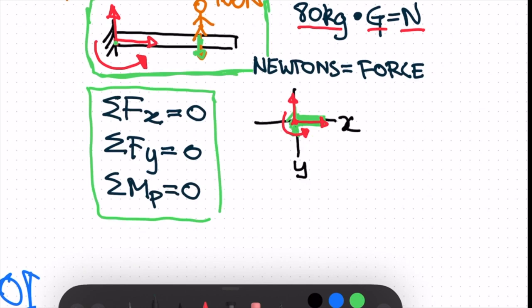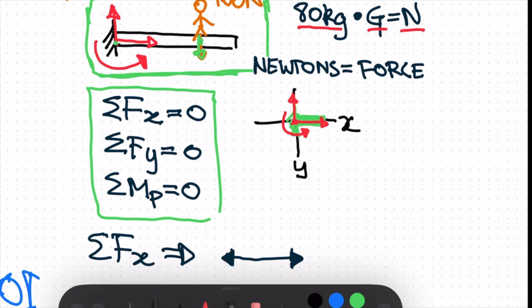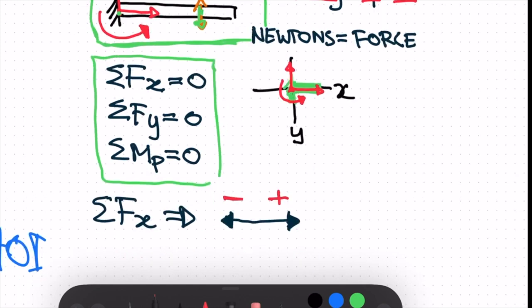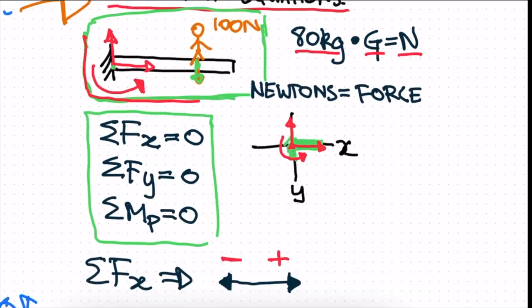Using this example, if we take the sum of forces in the x direction, we're looking at any forces acting left or right. We can assign: anything moving to the left is negative, anything moving to the right is positive. Looking at our beam, this person is standing here and gravity is acting on this person — so he's not actually moving anything within the beam in the x direction.